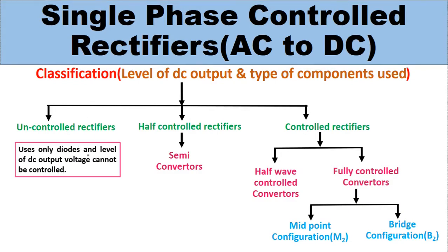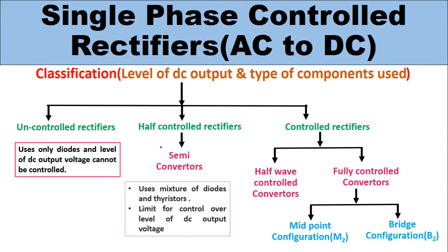Uncontrolled rectifiers use only diodes and the level of DC output voltage cannot be controlled. Half controlled rectifiers — also called semi converters — use a mixture of diodes and transistors, and there is a limited control over the level of DC output voltage in these semi converters or half controlled converters.